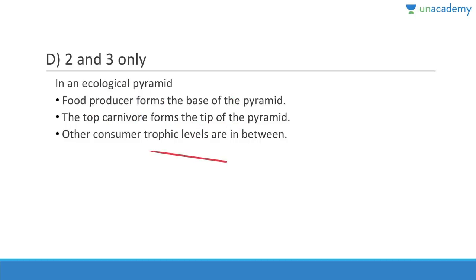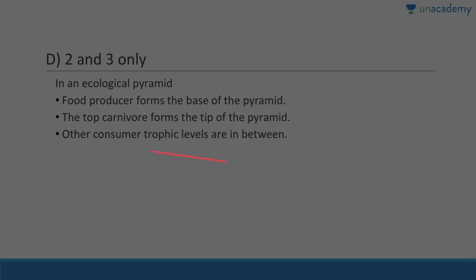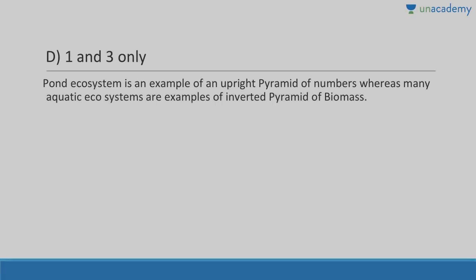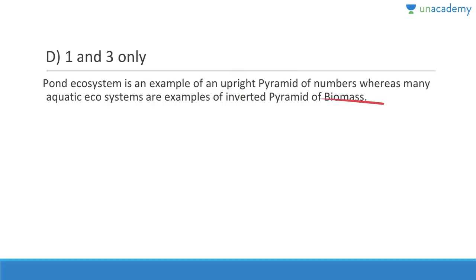Question twelve: Grassland ecosystem has an upright pyramid of numbers — correct. Pond ecosystem has an inverted pyramid of numbers — wrong; rather, parasitic ecosystem has an inverted pyramid of numbers — correct. Answer is D, one and three only. Pond ecosystem is an example of an upright pyramid of numbers, whereas many aquatic ecosystems are examples of an inverted pyramid of biomass.